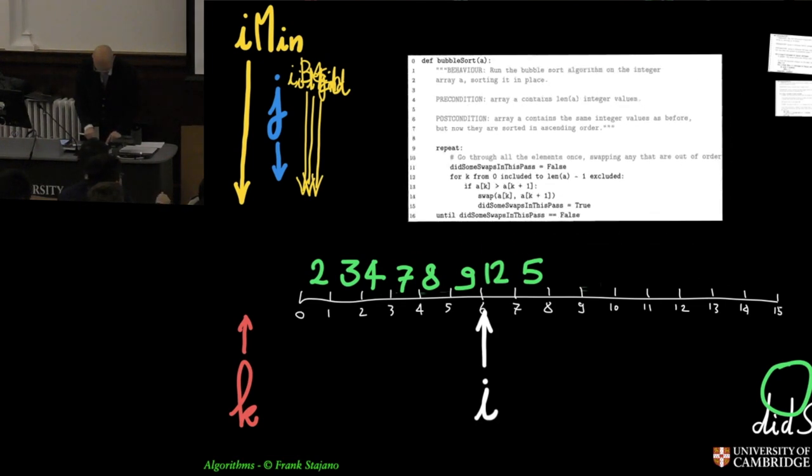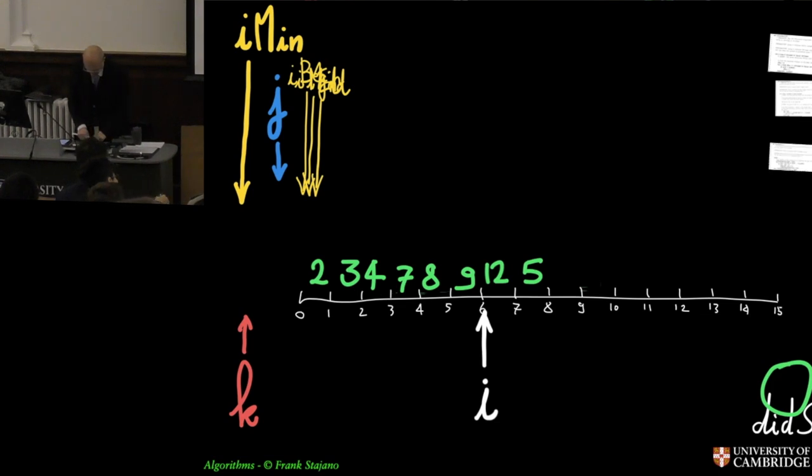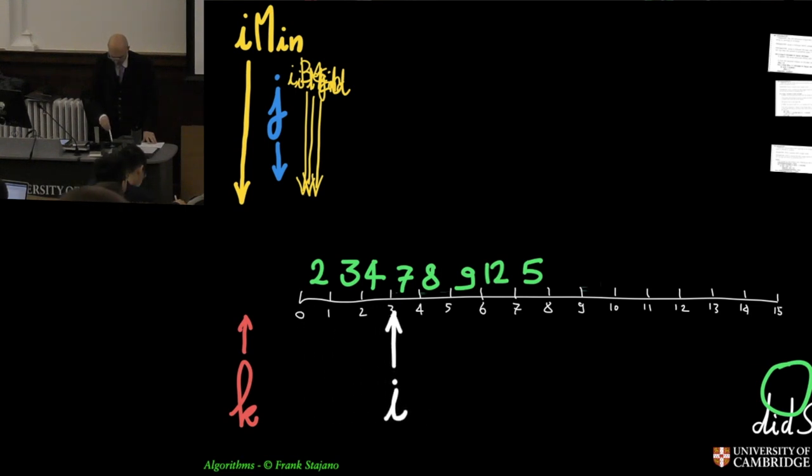What else have we got? Bubble sort. Okay, bubble sort is an algorithm that people often rediscover if they haven't been to an algorithms course. It's simply the idea that you could have a pass over the array, and anytime you find things that are out of order—these two are out of order—then you would swap them.